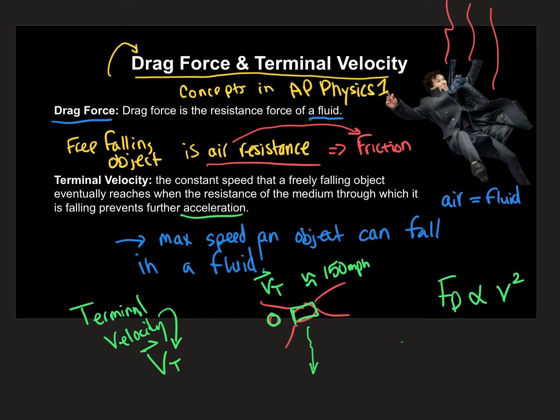So this is when all your forces are going to be equal to zero. So we can actually kind of say that the object is in equilibrium. So the object is in equilibrium when it is at terminal velocity.